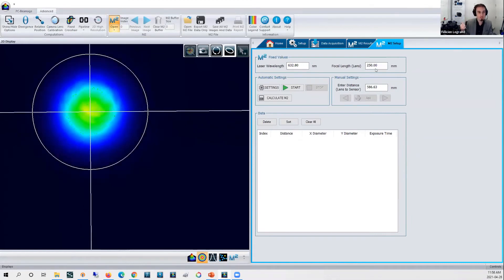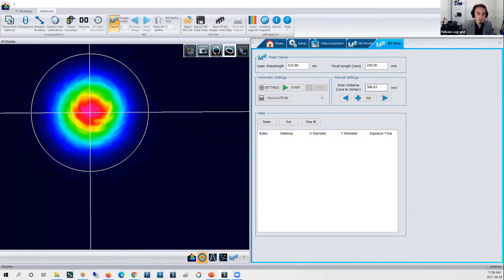All you need to do there at this point to get the software ready, you go to the M² menu. The moving stage there is initializing itself. Then all you need to do is enter your laser wavelength. That's a helium-neon laser here, so 632.8 nanometers, and the focal length of the lens that I've used here in the entrance of the system, which is 250 millimeter focal length.